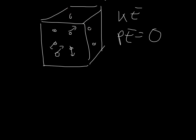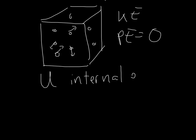If we had potential energy, then we would have to add the kinetic energy and the potential energy of each molecule in the gas, and we would have the total energy contained in the gas. We call this thing the internal energy, and we label it as U. It depends on how hot the gas is, and on how many molecules it has.